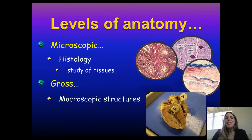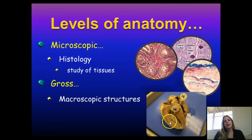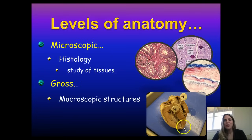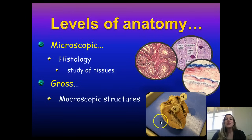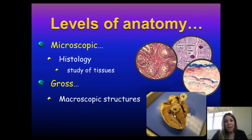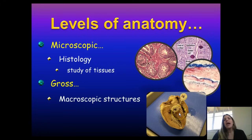Gross anatomy is the study of the macroscopic structures. Here's a dissected, preserved heart. Studying these little stringy things called the chordae tendinae, or the ventricle — those names of structures are gross anatomy because you're looking at the big stuff. If you take a tissue sample from the heart and look at it under the microscope, that is histology.